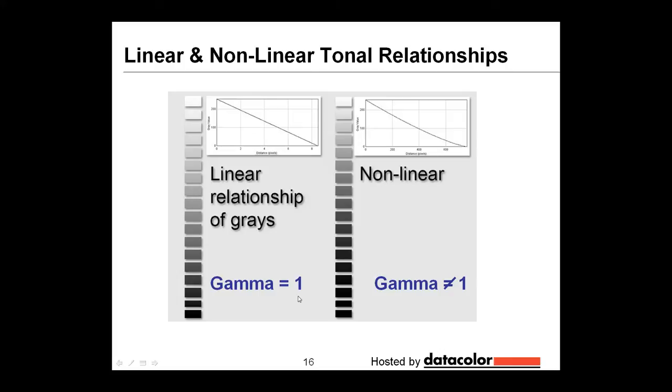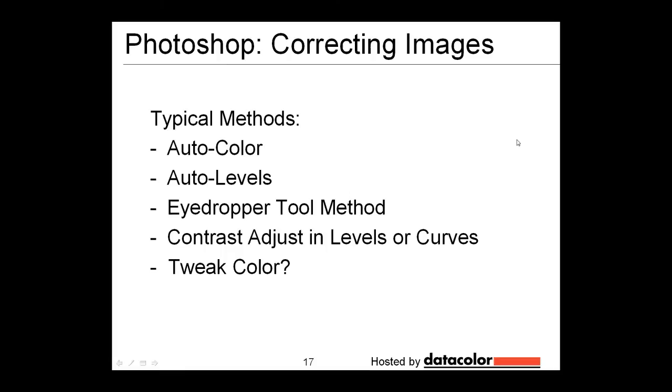Typically in this world, when we have a linear relationship, we consider that to be a gamma of one, although that number can change depending on the manufacturer. And when it's nonlinear, we consider that to be a gamma that is not equal to one. And I'm going to talk more about this as we go along because this is something that's a lot more important than may immediately meet the eye.